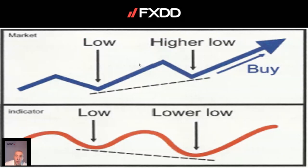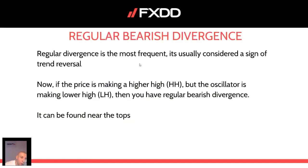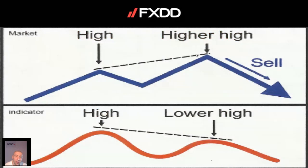Regular bearish divergence is also very frequent and is usually considered a sign of trend reversal. If the price is making a higher high but the oscillator is making a lower high, then you have a regular bearish divergence — it can be found near the tops. This is how it looks: some sort of a megaphone pattern, but actually the price is going down. A higher high on the price while, at the same time, a lower high on the indicator.